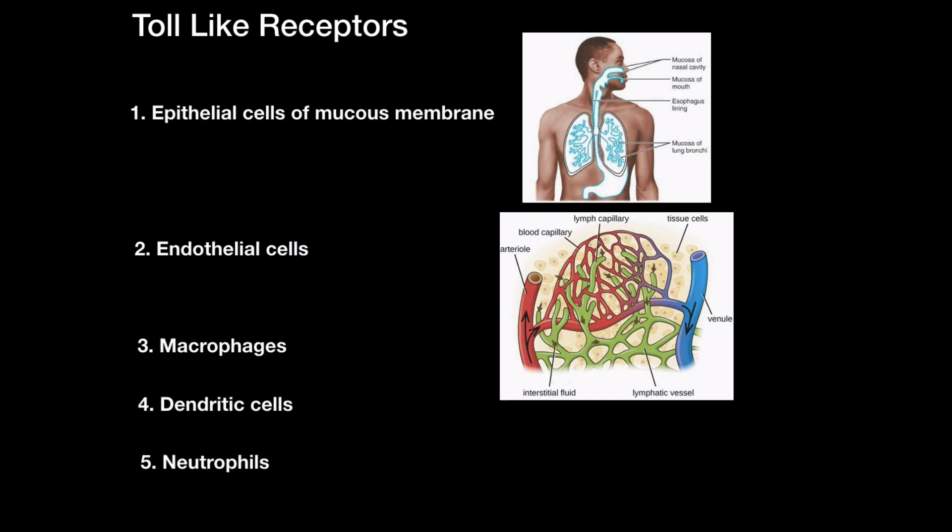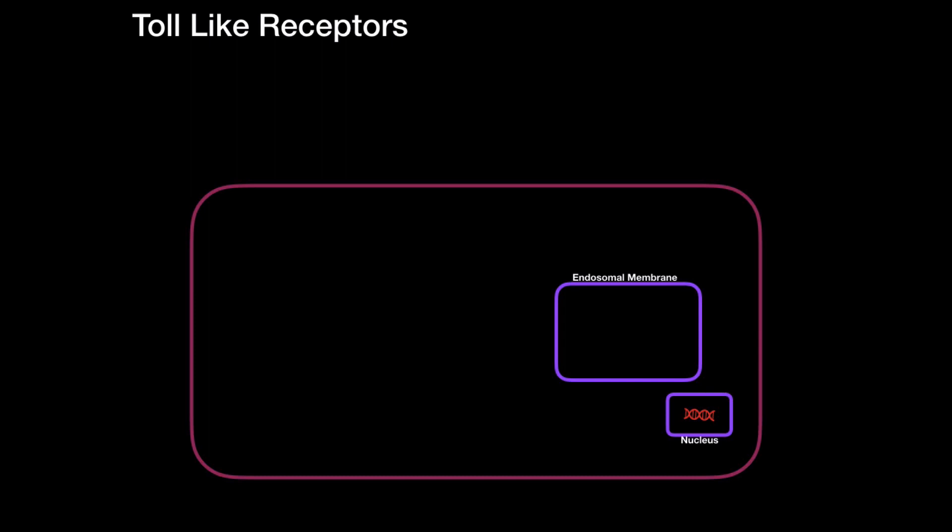Alright, so imagine this is one of the cells you have in your body that has toll-like receptors. Let's say it's an endothelial site, for example, or a macrophage. Keep in mind that different cells can have different toll-like receptors that other cells don't have and vice versa. But we will simplify it and put everything together. So let's say this is a macrophage because most toll-like receptors are actually going to be found on cells that can phagocytose.